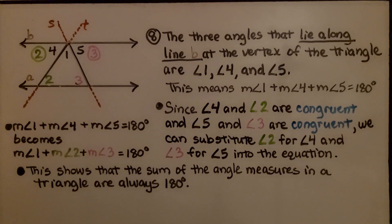This shows that the sum of the angle measures in a triangle are always 180 degrees. Since 4 is congruent to 2, we can say the measure of angle 1 plus the measure of angle 2, and 5 is congruent to 3, we can say plus the measure of angle 3 equals 180 degrees.